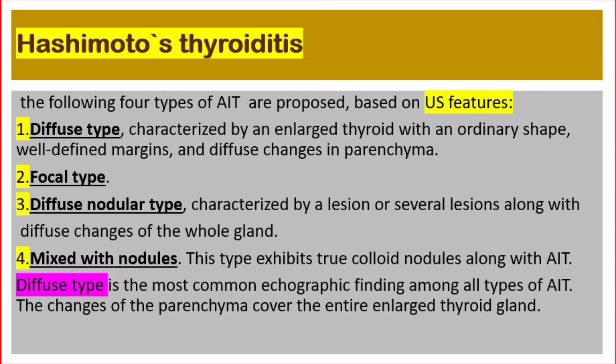The following four types of autoimmune thyroiditis are proposed based on ultrasound features. Number one: diffuse type, characterized by an enlarged thyroid with ordinary shape, well-defined margins, and diffuse changes in parenchyma. Number two: focal type. Number three: diffuse nodular type, characterized by a lesion or several lesions along with diffuse changes of the whole gland. Number four: mixed type with nodules, exhibiting true colloid nodules along with autoimmune thyroiditis. The diffuse type is the most common echographic finding.